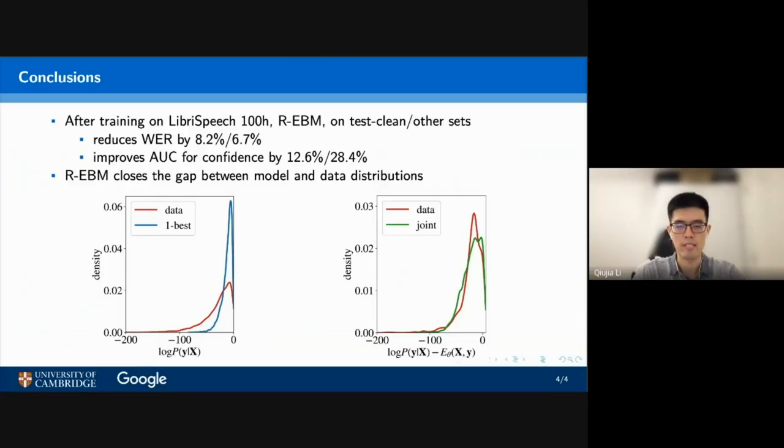By plotting the density curves of the data and the model distributions before and after applying R-EBM, the distribution gap is clearly narrowed with the R-EBM.